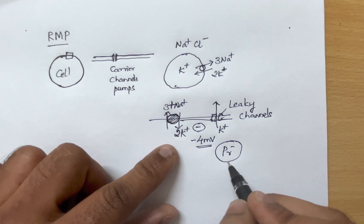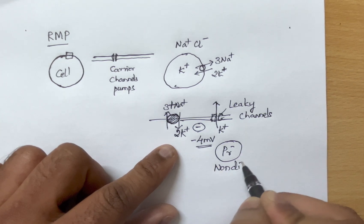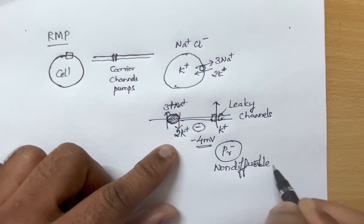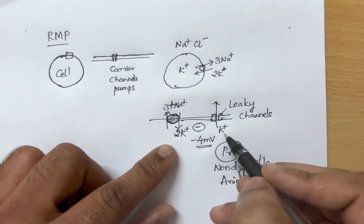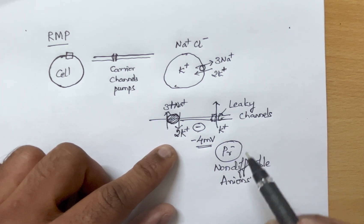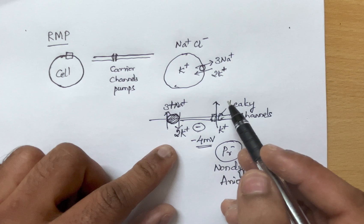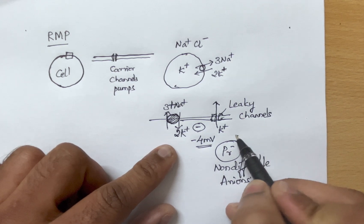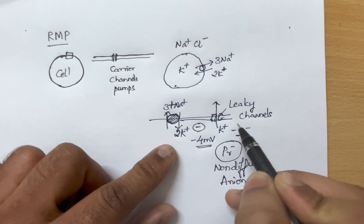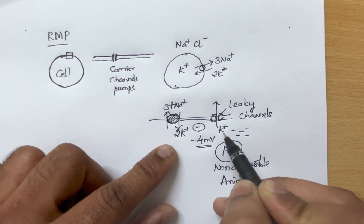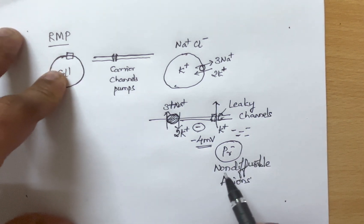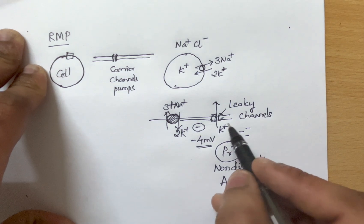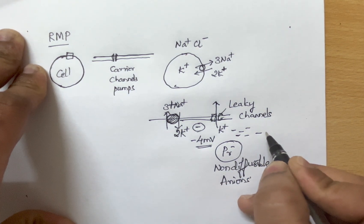There are also certain proteins present within the cell which are non-diffusible anions. Whenever potassium moves out of the cell, this is not accompanied by the movement of these negatively charged proteins, so only the positive charge moves out. The negative charge within the cell accumulates, making the inside of the cell more and more negative.